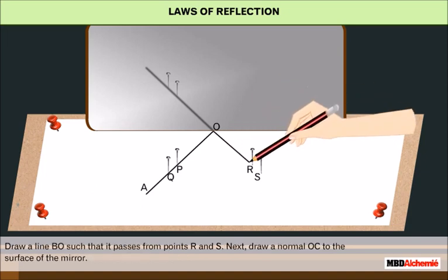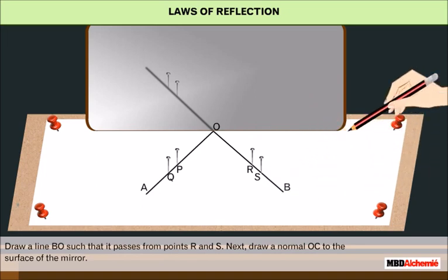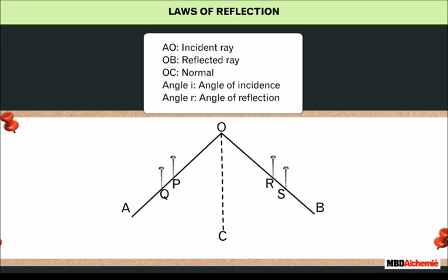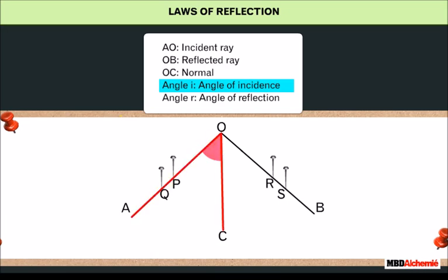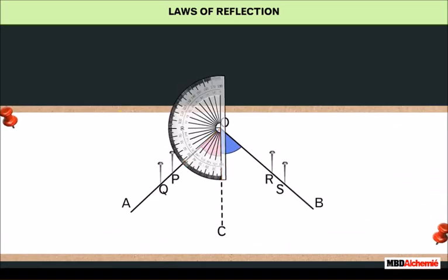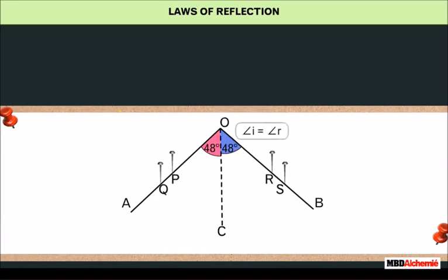Draw a line BO such that it passes from points R and S. Next, draw a normal OC to the surface of the mirror. The ray of light AO which is incident on the plane mirror is called the incident ray, and the ray of light reflected from the plane mirror OB is called the reflected ray. O is the point of incidence. OC is the normal to the plane. The angle between the normal OC and the incident ray AO is called the angle of incidence, angle I. The angle between the normal OC and the reflected ray OB is known as the angle of reflection, angle R. Measure angle AOC and angle BOC. They are found to be equal.